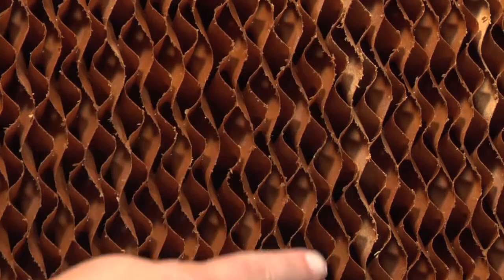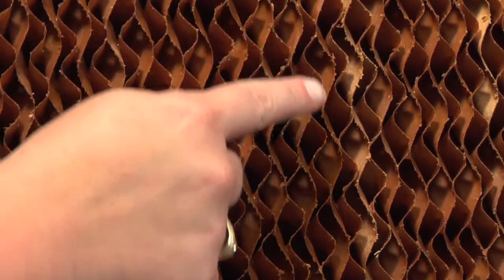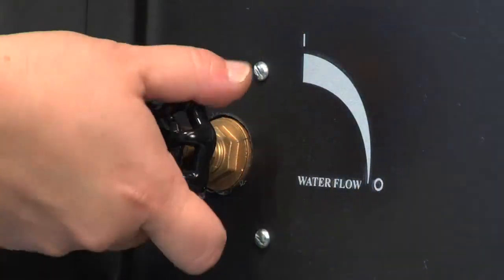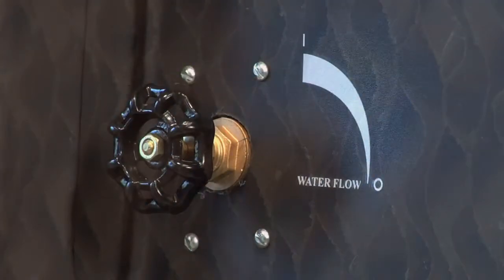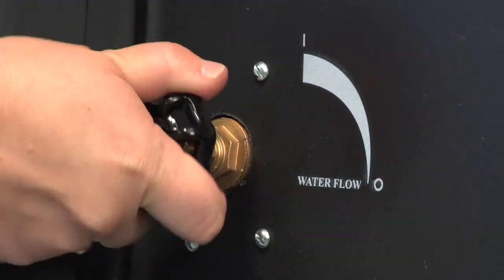You should see a few dry streaks. If you have more than that, turn the valve to the left to increase the flow. If the entire pad is wet or water is streaming over the pads, turn the valve to the right to slow the water down.